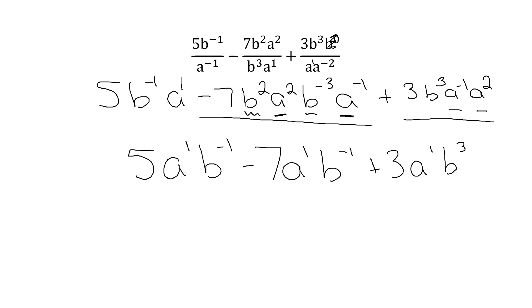So 5 minus 7 is negative 2. And this little term just stays all by itself. Now the truth is, I should not leave this this way. I should move all of my negative exponents to the right place. However, I'm not going to make you do that right now. We will work our way there.